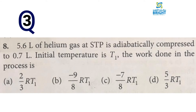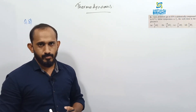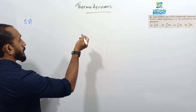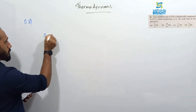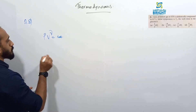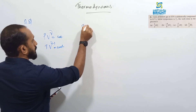Third question: 5.6 liters of helium gas at STP is adiabatically compressed to 0.7 liters; initial temperature is T1. Find the work done. For an adiabatic process, TV^(γ−1) = constant. For a monatomic gas, γ = 5/3. So T1·V1^(γ−1) = T2·V2^(γ−1), giving T2 = T1·(V1/V2)^(γ−1).